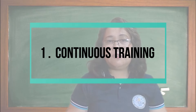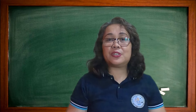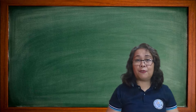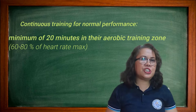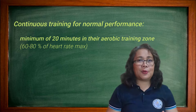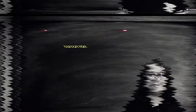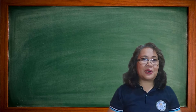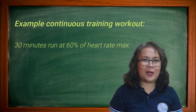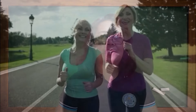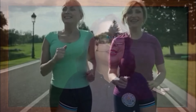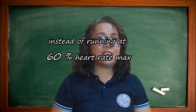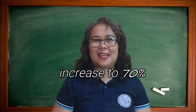Continuous training involves low-intensity exercise for long periods of time without a rest or break. A performer normally performs continuous training for a minimum of 20 minutes in the aerobic training zone, which is 60% to 80% of heart rate max. An example continuous training workout could be a 30-minute run at 60% heart rate max. Adjusting the pace or effort of the activity can vary the exercise intensity — for example, instead of running at 60% heart rate max, increase it to 70%.